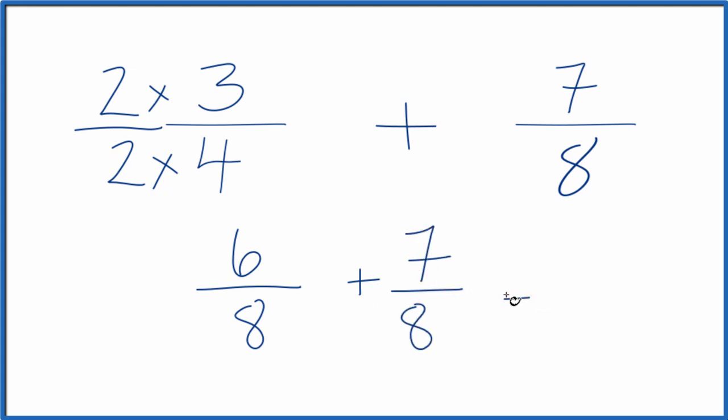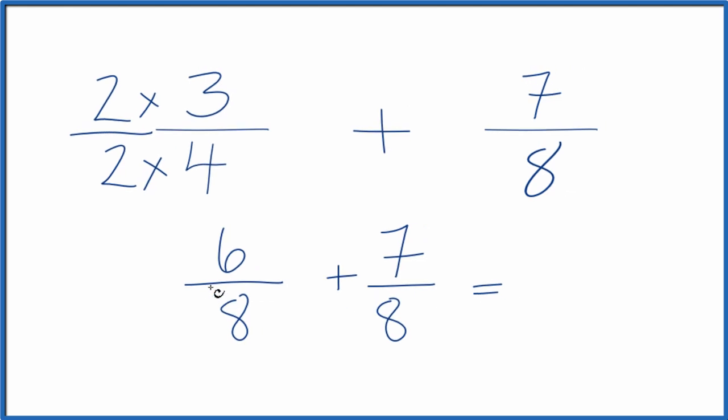And when we add fractions, we keep the denominator the same. If these are the same, we can just keep that the same. Six plus seven equals 13. So when we add three-fourths plus seven-eighths, we get 13-eighths.